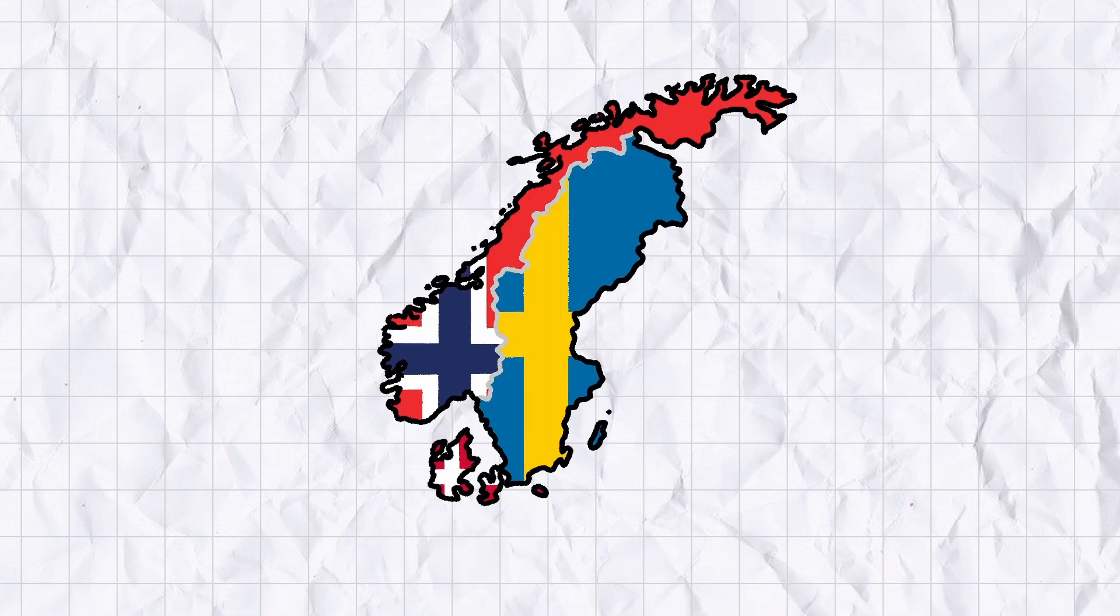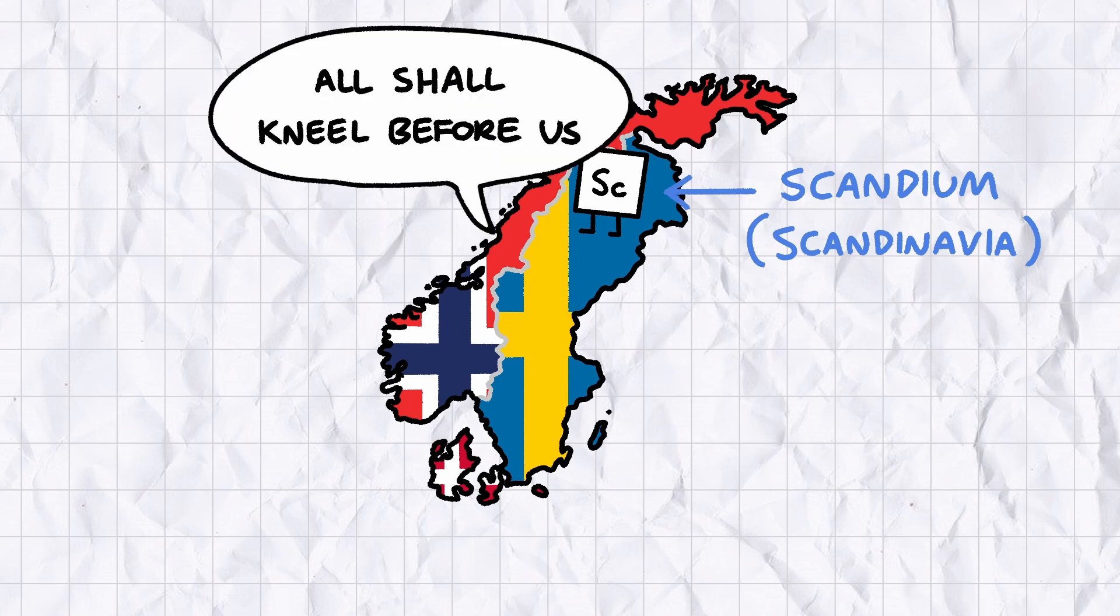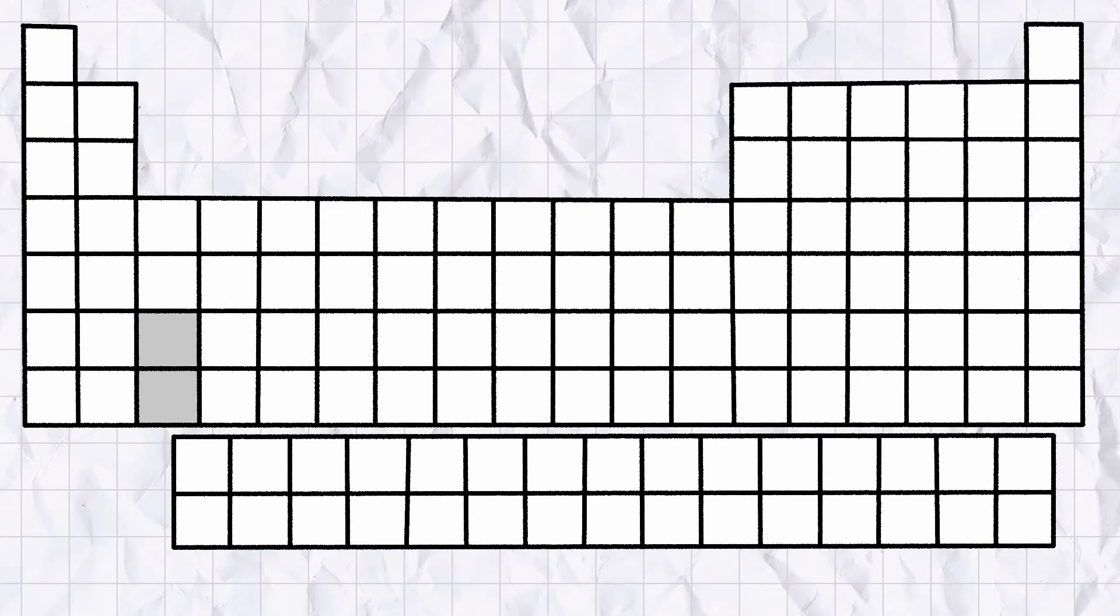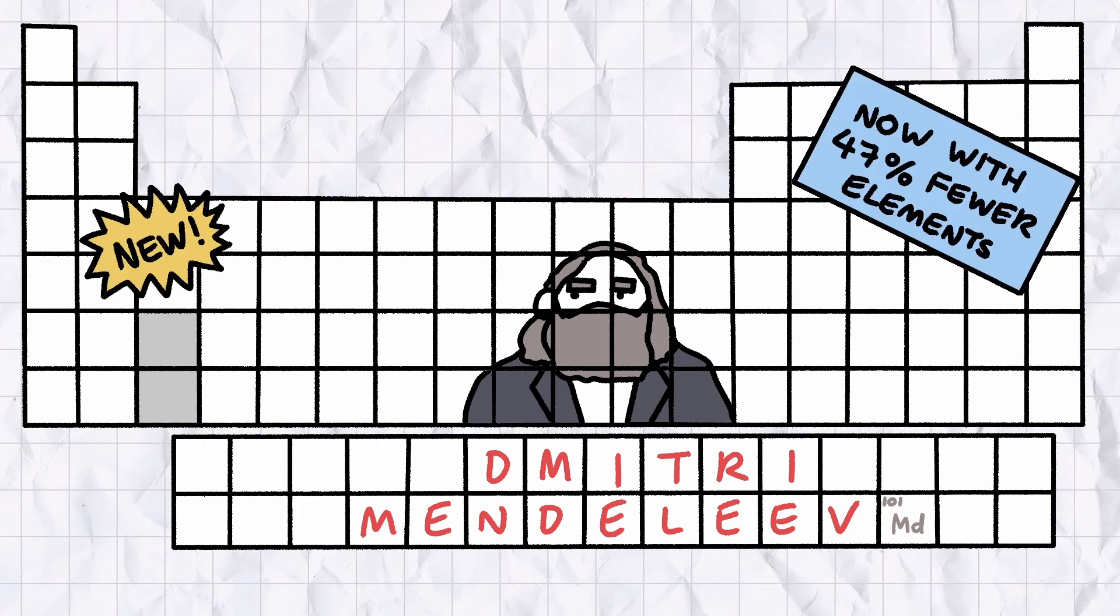Nilsson christened his new element Scandium after his homeland of Scandinavia, tightening the tyrannical rule of the Swedish over the Periodic Table. What's interesting about Scandium's discovery is that it was one of the first elements to be predicted by Dmitri Mendeleev's Periodic Table, which he created less than ten years before Nilsson published his findings.